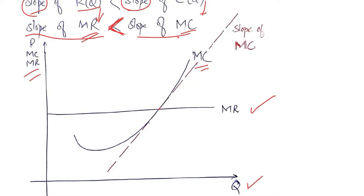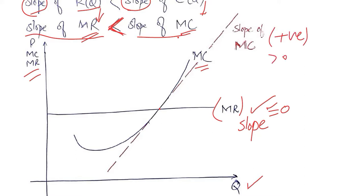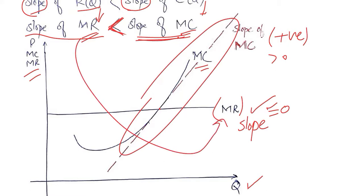Comparing the slopes: the slope of the marginal revenue curve is zero because it is a horizontal line, while the slope of the marginal cost curve is some positive value greater than zero. This means the slope of the marginal cost curve is greater than the slope of the marginal revenue curve, confirming that the condition — slope of MR less than slope of MC — is fulfilled.